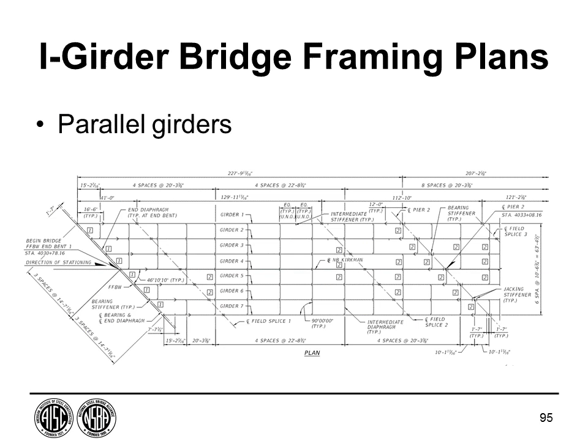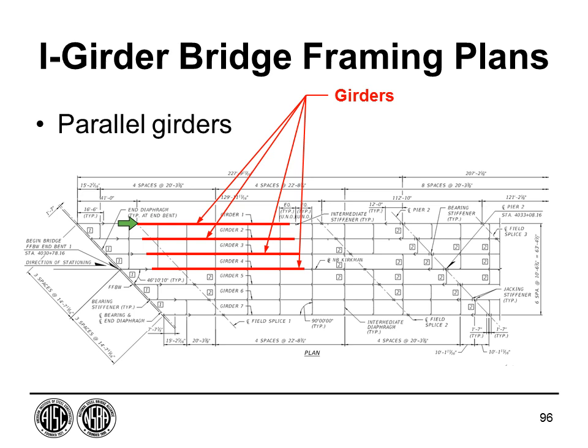So far, only bridges of constant width have been shown. With a constant width bridge, girders are typically oriented parallel to each other, with the same spacing maintained along the entire length. This can be seen in the framing plan where each of the highlighted girders spans longitudinally with equal spacing throughout.